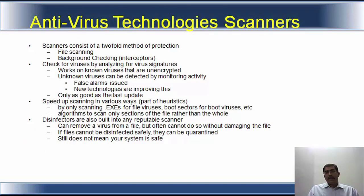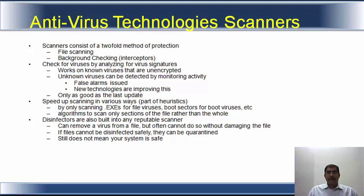The scanners basically have a method of twofold protection. One is it scans files; second is background checking, which is also called interceptors. It checks for viruses by analyzing the virus signatures. It works on known viruses that are unencrypted — that is the key point. If you encrypt a virus, it is not detected. Unknown viruses can be detected by monitoring activity.